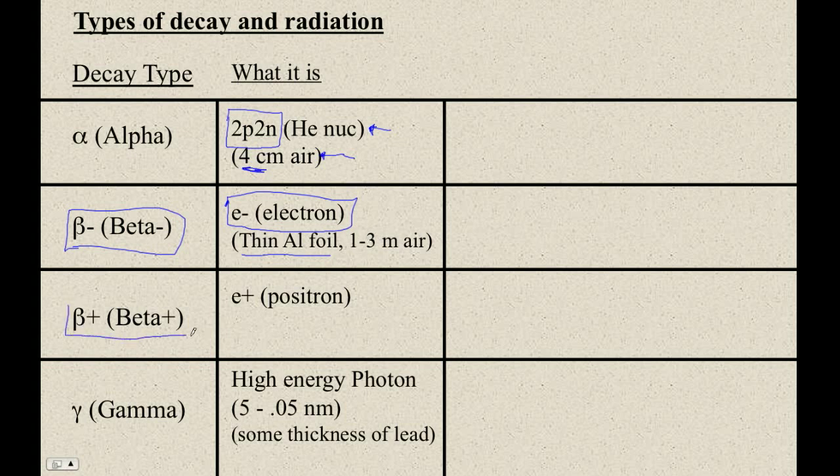Beta plus decay is that the nucleus creates not an electron, but an antimatter electron. This is antimatter. And indeed, it does exist. That's the kind of physics we're doing. It's an antimatter electron. So, it's exactly the same as an electron, only it is positively charged. It's called a positron.